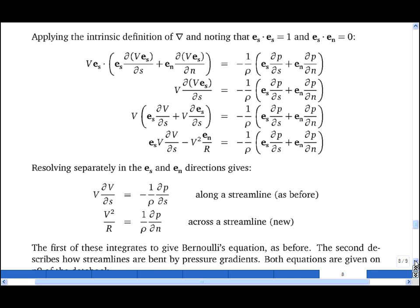One then resolves separately in the Es and En directions to find one expression for the pressure gradient along a streamline, which is the same as the one we had before when examining a straight streamline, and it integrates to give Bernoulli's equation.